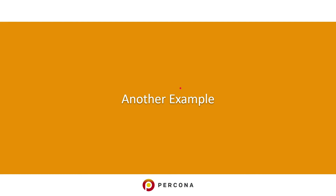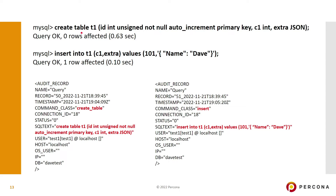Another example in the audit logs: let's create a table called t1 and add some data. When the table is created, the log has a query record where the command class is 'create table' and it gives you the full SQL text so you can find out who did what. When you insert data, the command class becomes 'insert' and it shows the exact text used to add that record to the table.